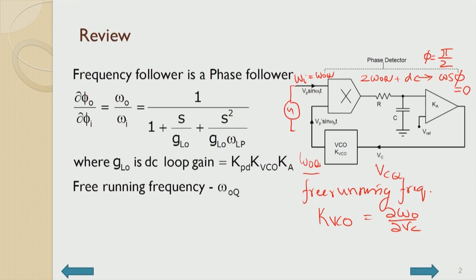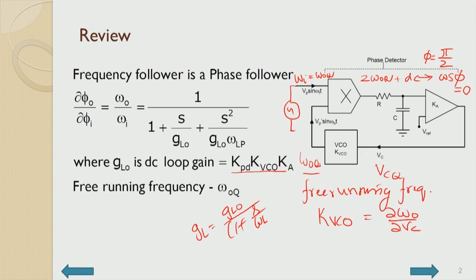So it just follows the phase: delta phi naught by delta phi I is therefore equal to 1 by 1 plus 1 over loop gain. The loop gain is made up of these components — it has a DC component which is K_PD, then K_A, and K_VCO — that is what is called DC loop gain — and then it has a component corresponding to the low pass filter.